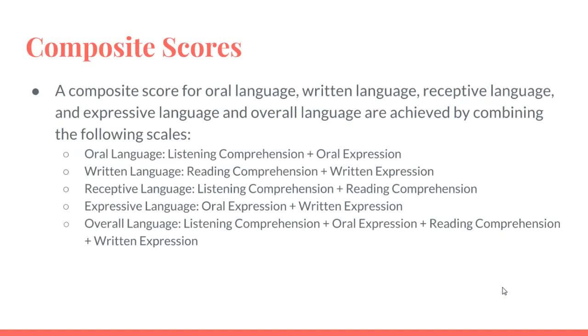The composite scores for oral language, written language, receptive language, and expressive language, and also overall language are achieved by combining the following scales. Oral language is achieved by the combination of listening comprehension and oral expression.